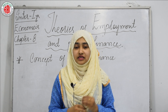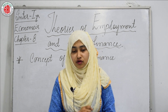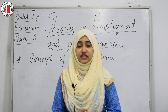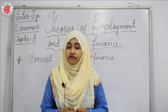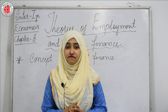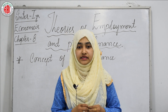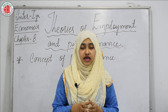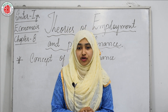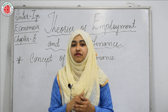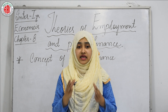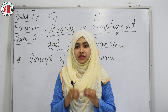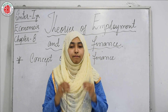Now we will see the components of Public Finance. The first component is public revenue. A modern government has many functions to perform and needs huge revenue to perform all its functions efficiently. It collects revenue by imposing taxes and also receiving money from people in many other forms. The revenue received by the government from different sources is called public revenue.